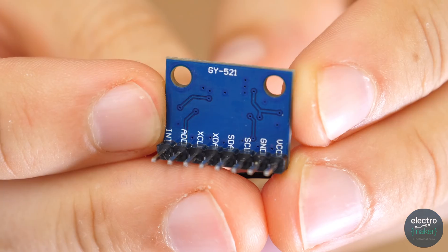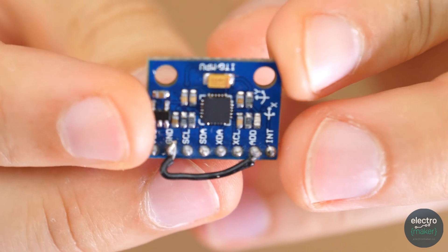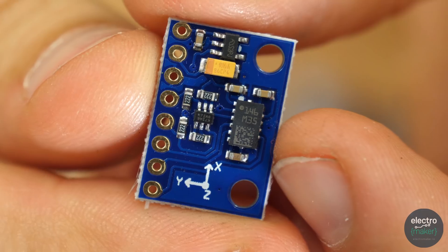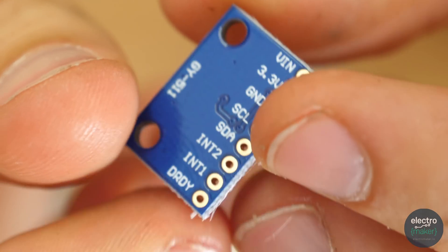Then we need some sensors. I'm using two GY521 gyro boards and a GY511 for the compass capabilities.